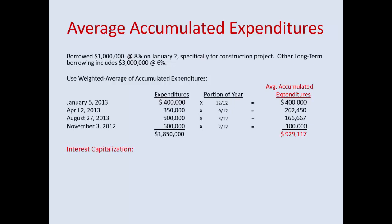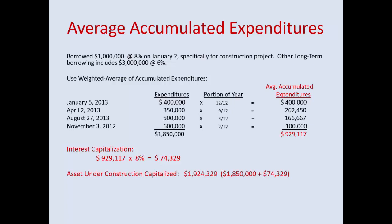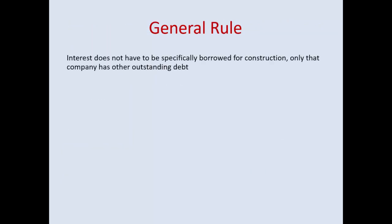Note: November 3rd, 2013 is a typo — this is an old PowerPoint revised for 2015. For interest capitalization: $929,117 times 8% gives the capitalized interest. The asset under construction totals $1,924,000 — you capitalize the $1.85 million expenditure plus 8% interest on the average accumulated expenditures. As a general rule, interest does not have to be specifically borrowed for construction; only that the company has other outstanding debt. You then use a weighted average interest rate on all other debt.